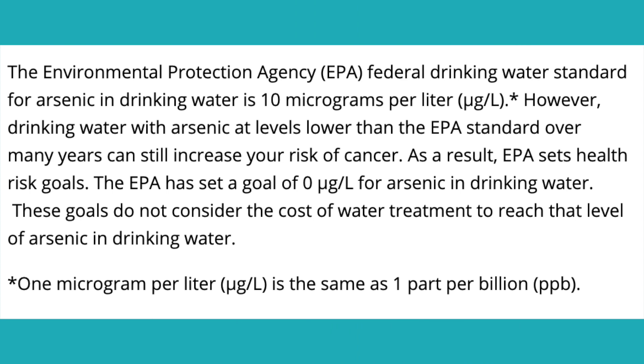Find out what the levels of arsenic are in the groundwater of your country. According to the Environmental Protection Agency, the standard for arsenic in drinking water is 10 micrograms per litre. However, drinking water with arsenic at levels lower than the EPA standard over many years can still increase your risk of cancer. As far as food goes, there may be traces of arsenic in meat, fish, and poultry — the latter containing the highest levels, due to the antibiotics in chicken feed. And rice has also been found to contain higher levels than water.